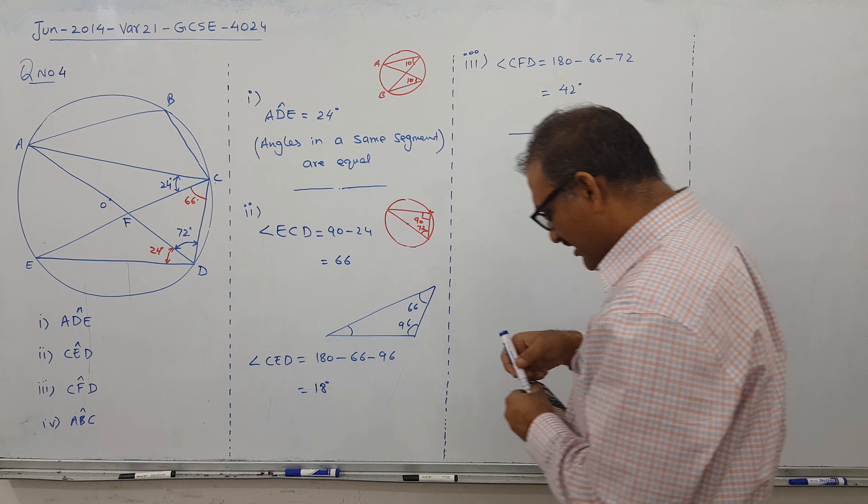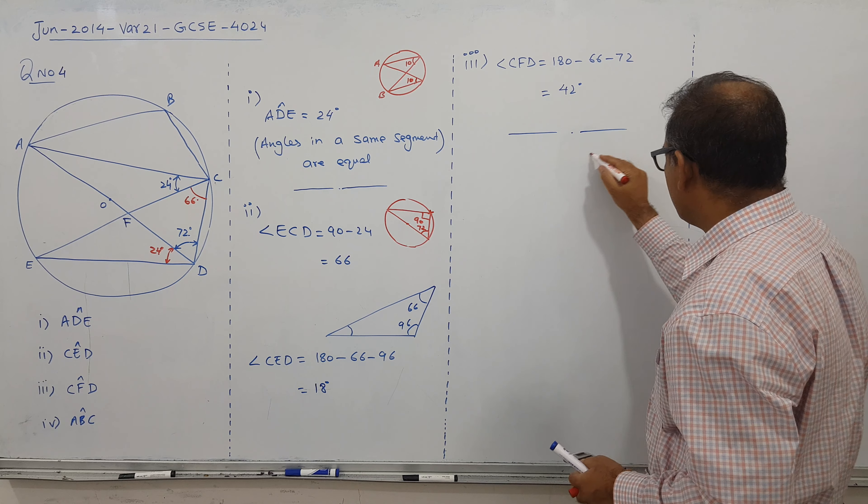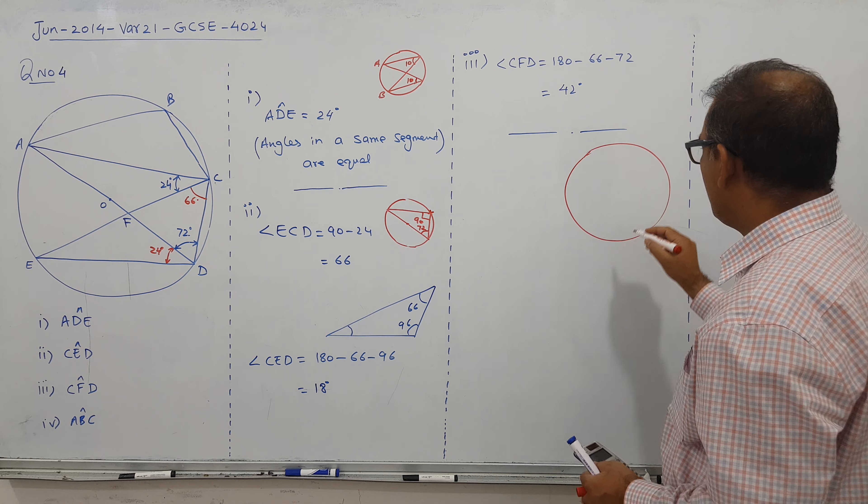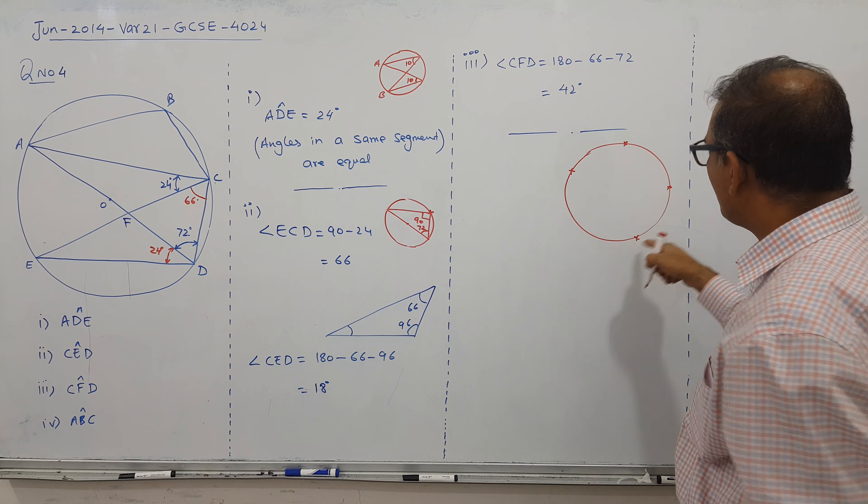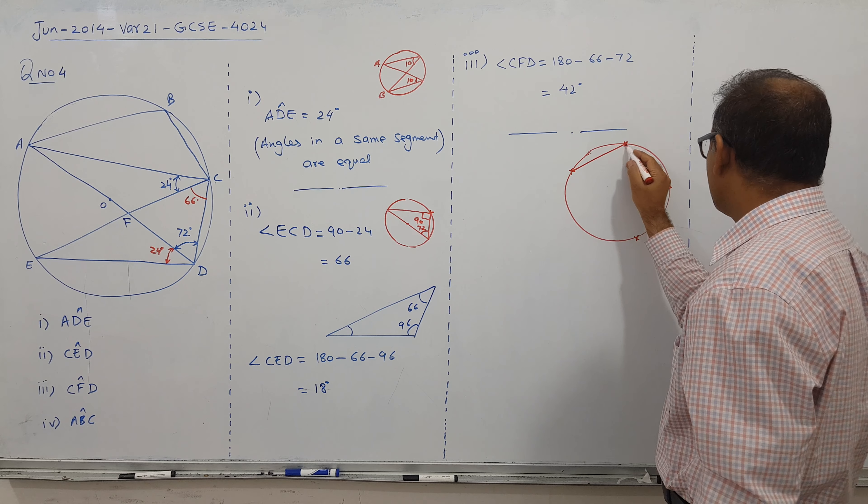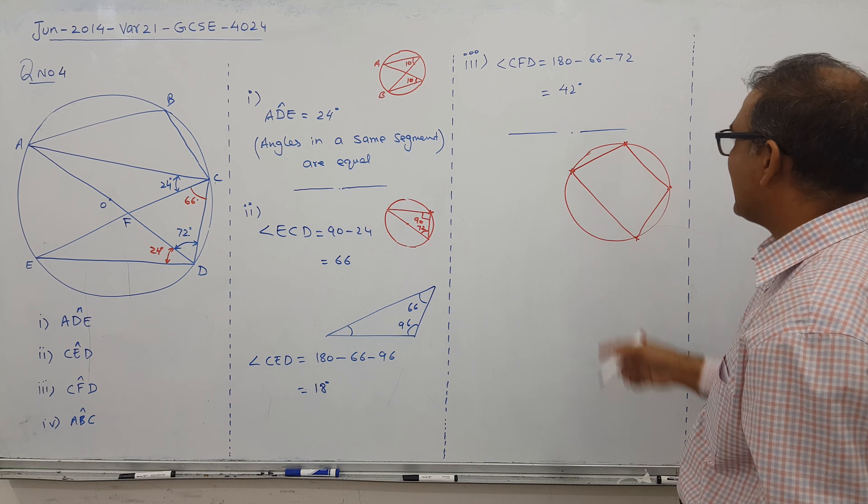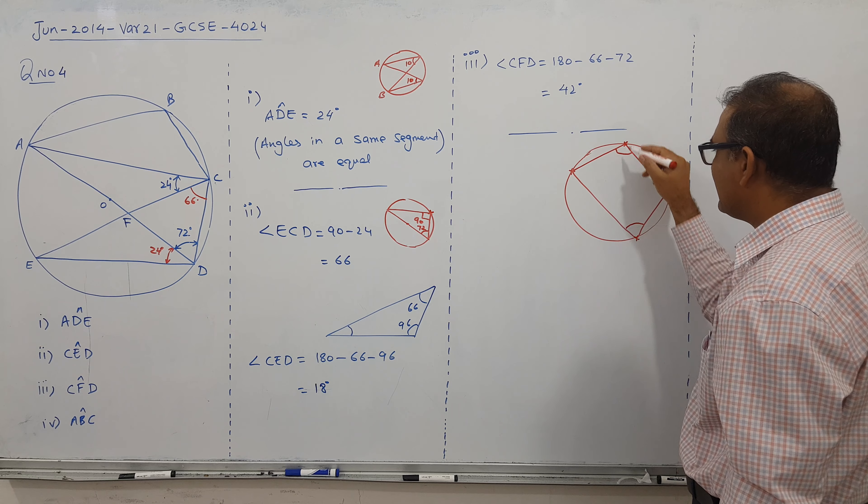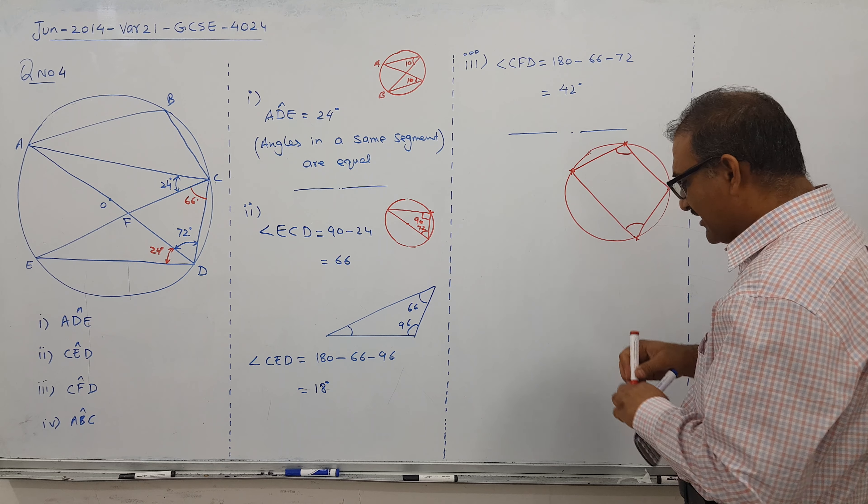Fourth: ABC. We have a property here, cyclic quadrilateral. All four points are on the circle edge, not out, not inside. If I join them all four, I get a special shape called cyclic quadrilateral. These angles are always supplementary, meaning if you add them, they give you 180.